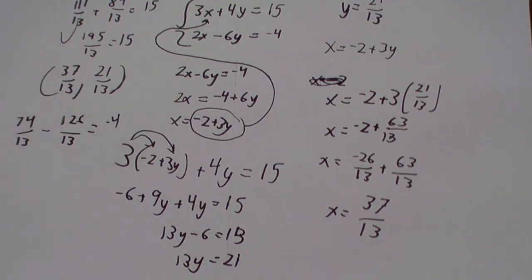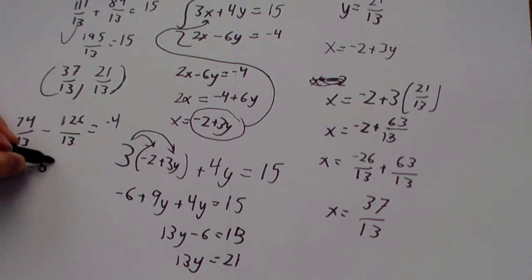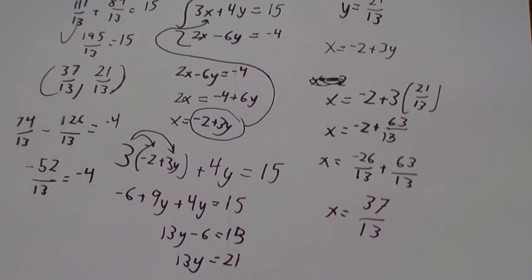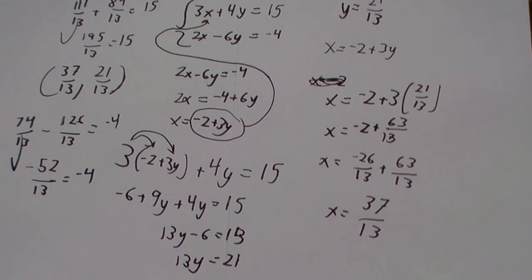Alright, now, 74 minus 126 is negative 52. So, we've got negative 52 over 13 is negative 4. And if we divide 52 by 13, that checks out. So, now, we know that our solution is true, because it works for both equations.